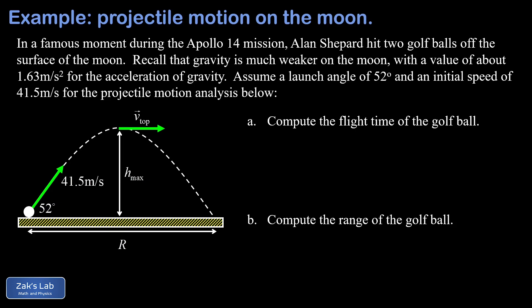Another cool thing about projectile motion on the moon is that our assumption that drag forces can be ignored is actually accurate because the moon has no appreciable atmosphere. So we're given a launch angle of 52 degrees and an initial speed of 41.5 meters per second for this flight, and we're going to answer four questions about the flight of the ball.